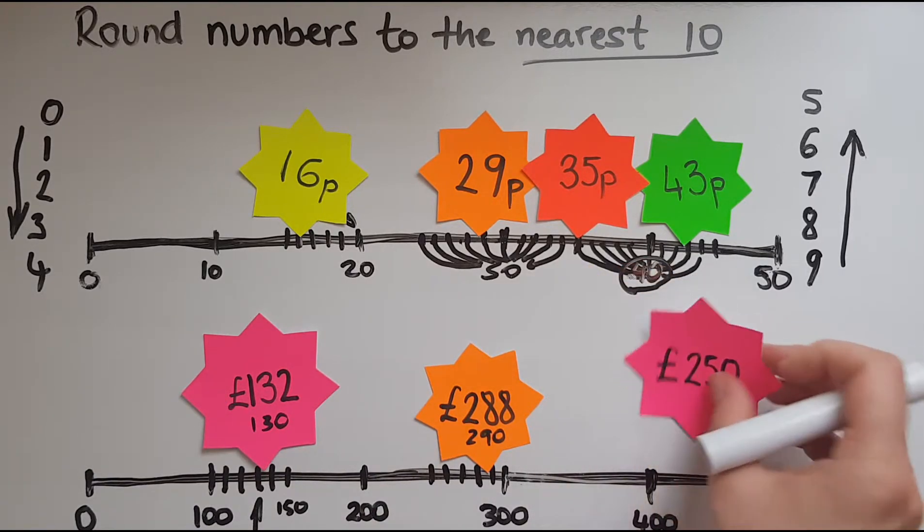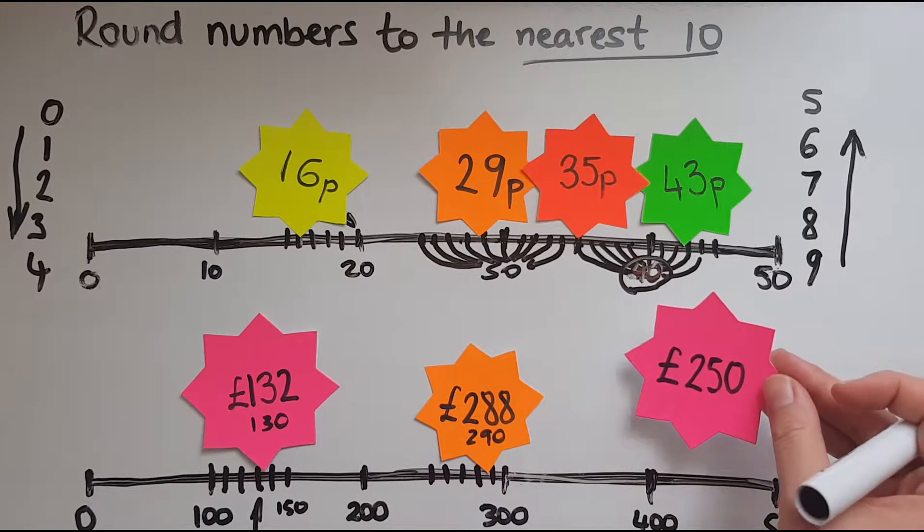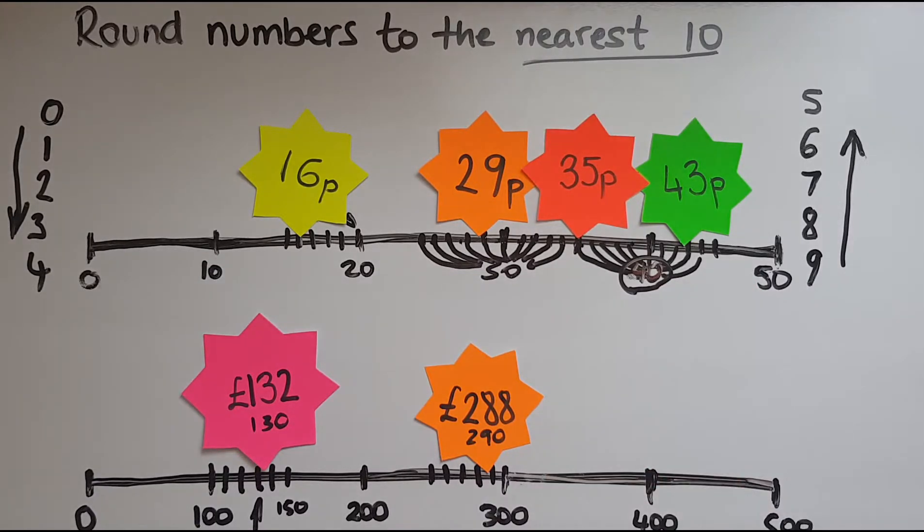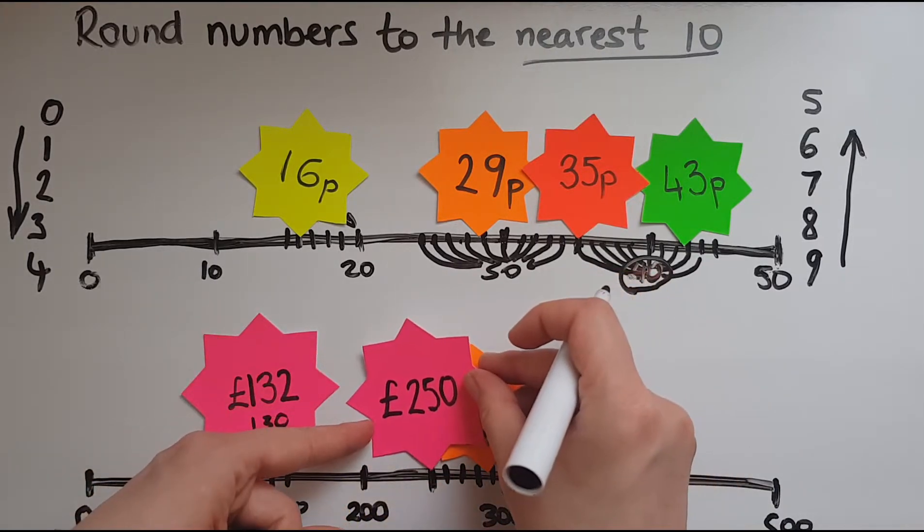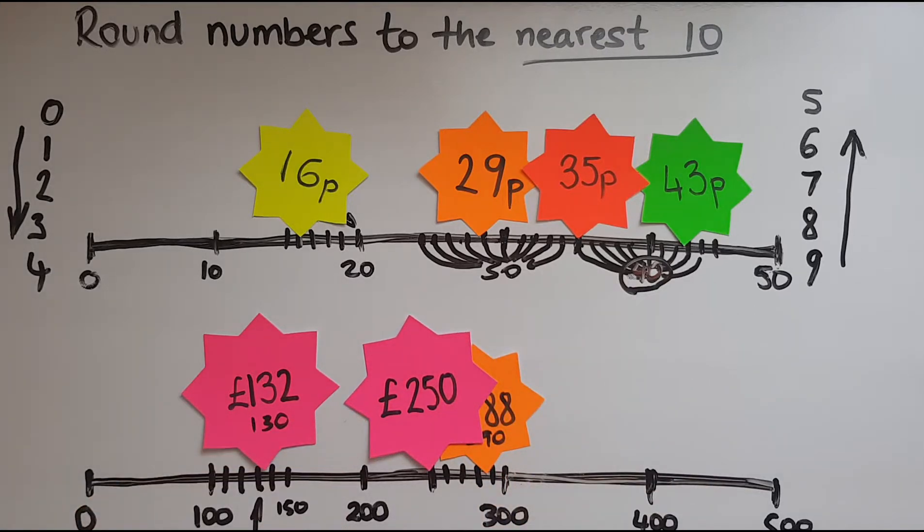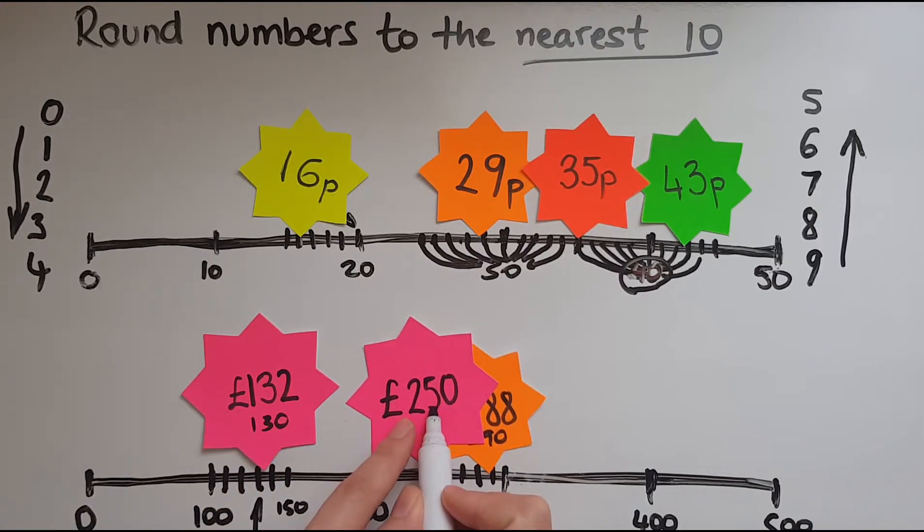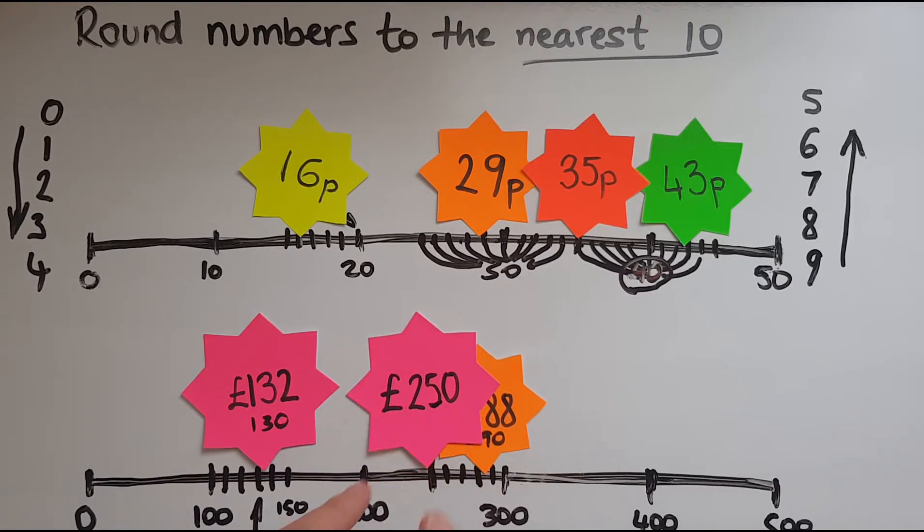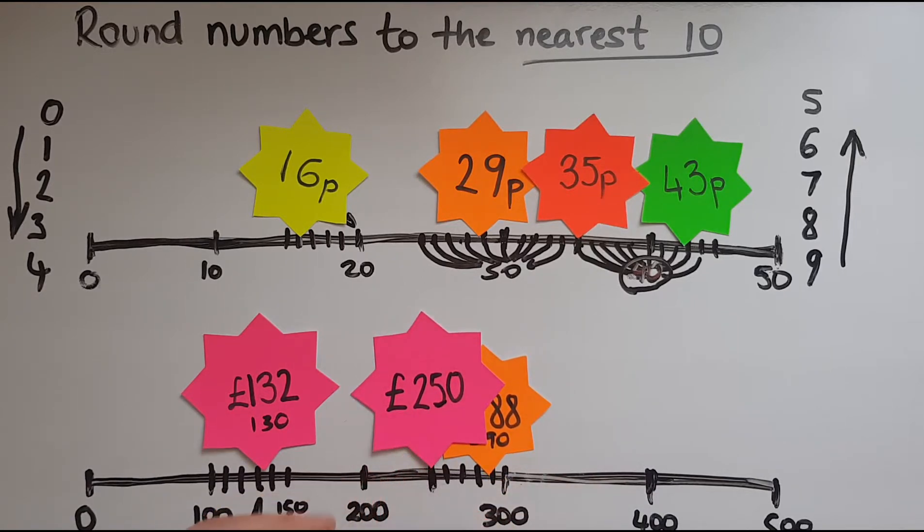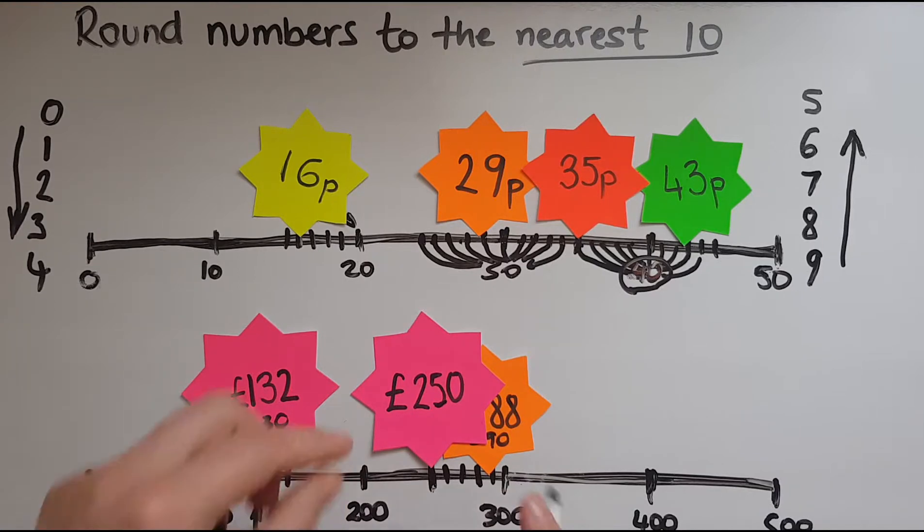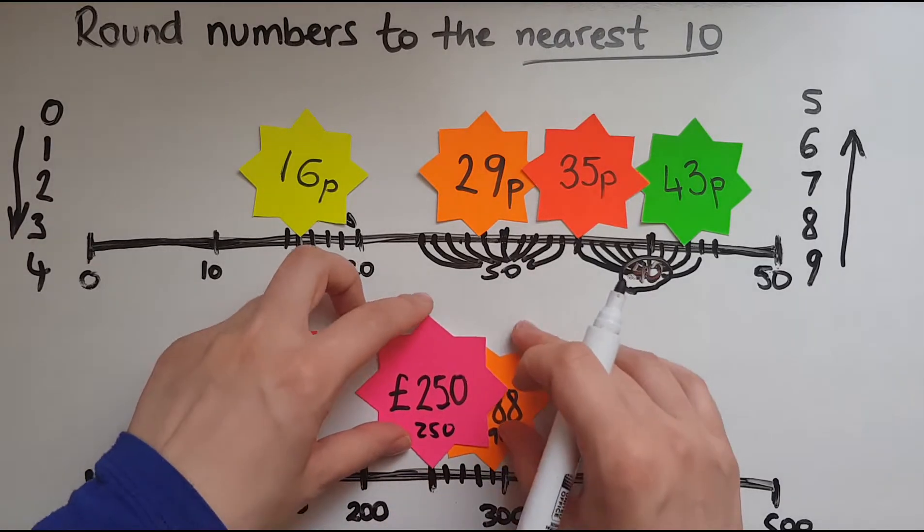When it comes to 250, where does that stand? There is 200, 300 and we said this was 250. So it's right in the middle. But we're trying to decide which 10 it is nearest to. So we're looking at this digit, the 5 in there. Is it 250 or 260 that this is closer to? And as you can see, this is spot on 250. So to the nearest 10, that is exactly 250. So it doesn't change.